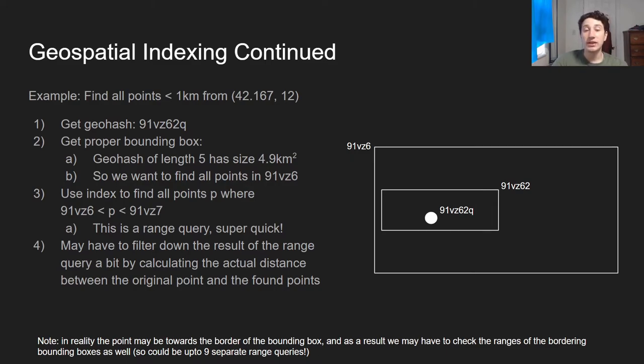As a result, since these boxes aren't perfectly tailored size for us, we may have to filter down the results of the actual range query a little bit. But just compared to an index on either the latitude or the longitude, this is hugely efficient and much, much faster.